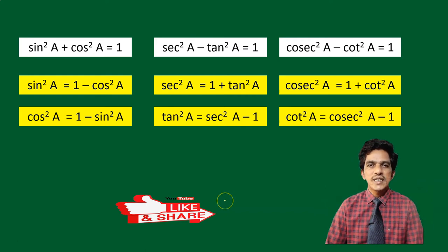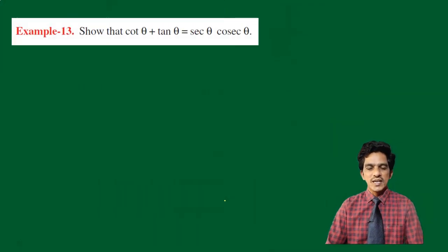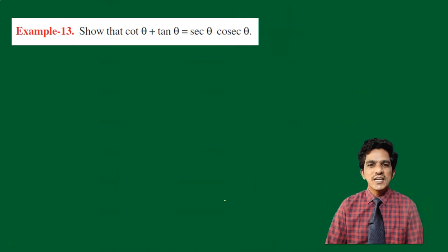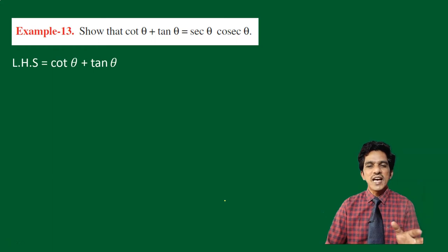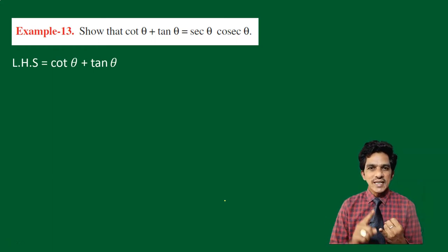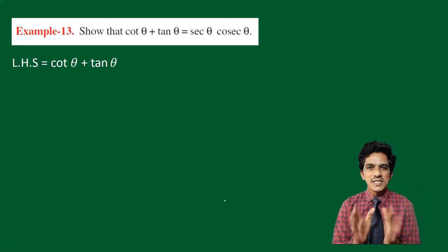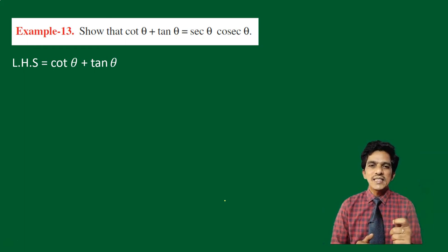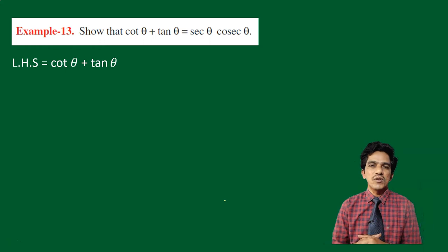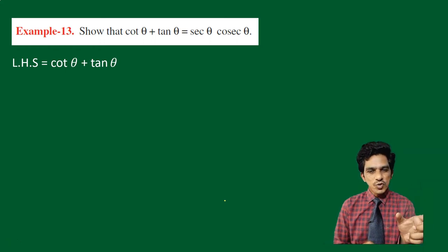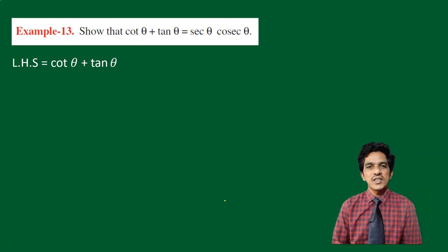Let us look at example number 13. Show that cot theta plus tan theta is equal to secant theta into cosecant theta. Here on the left side, we have sum of two trigonometric ratios. You have to convert the sum of two trigonometric ratios into the product of some other trigonometric ratios.